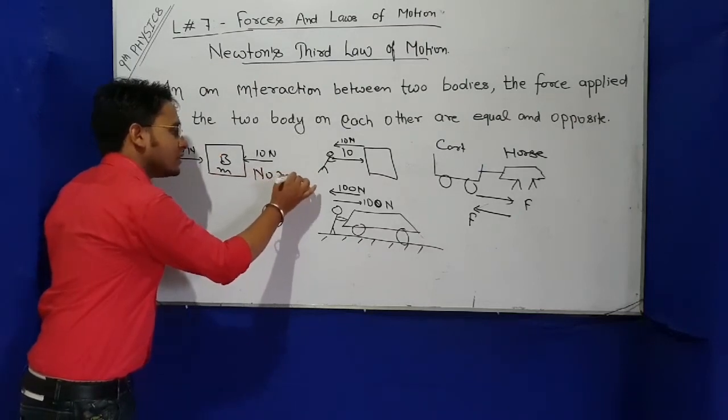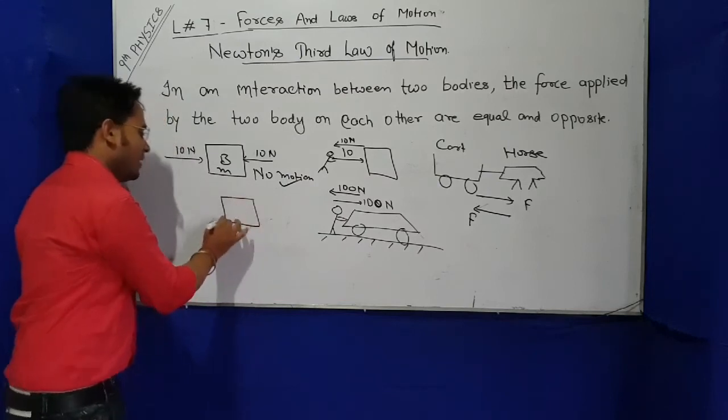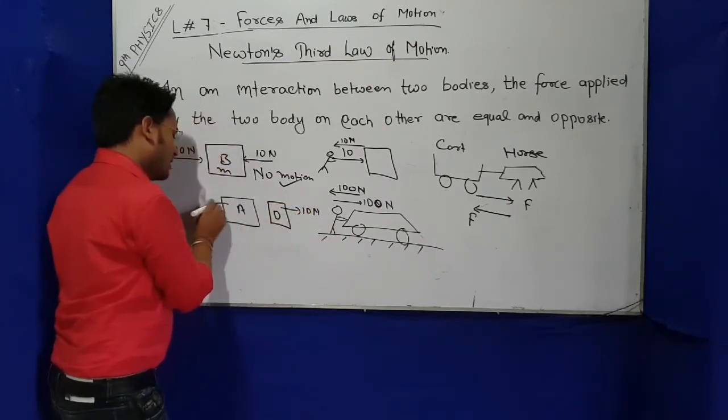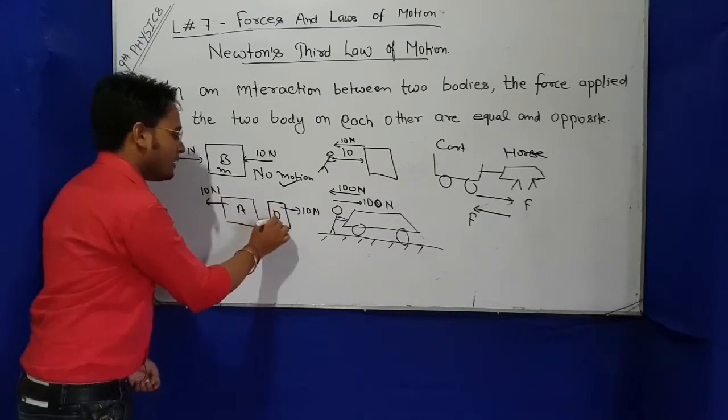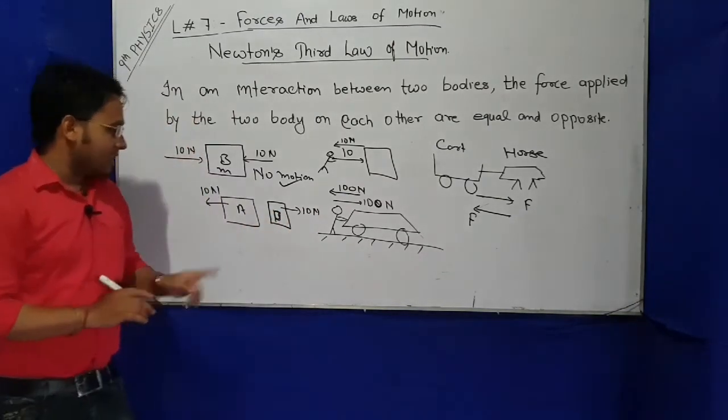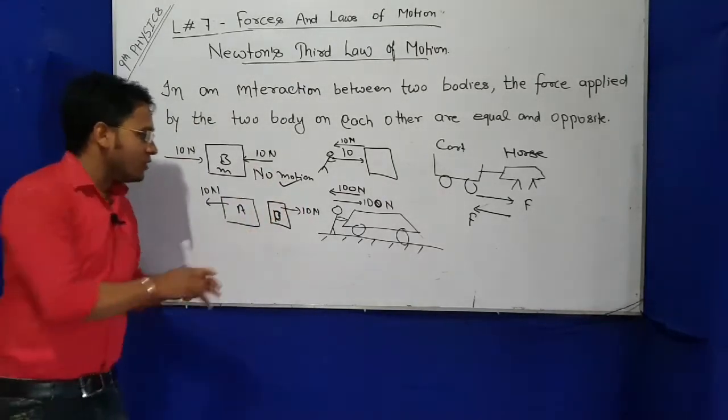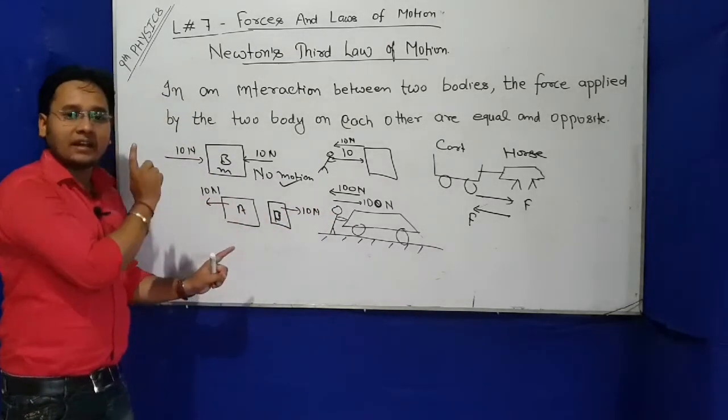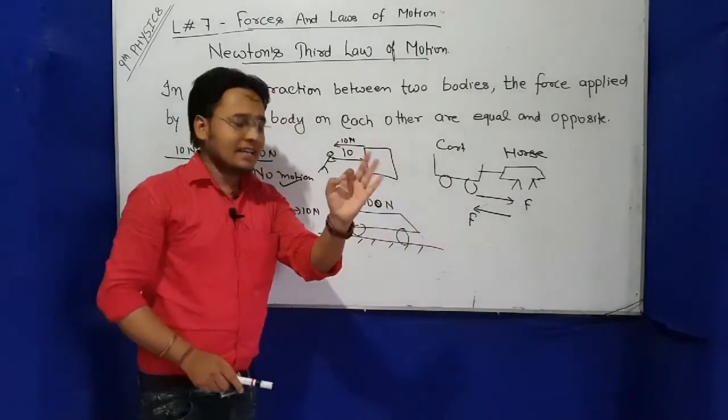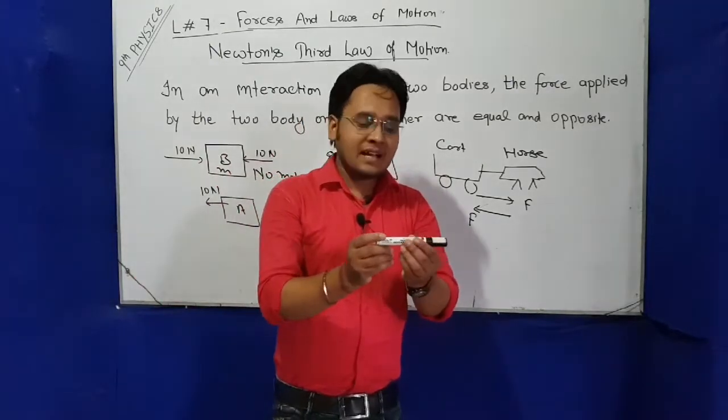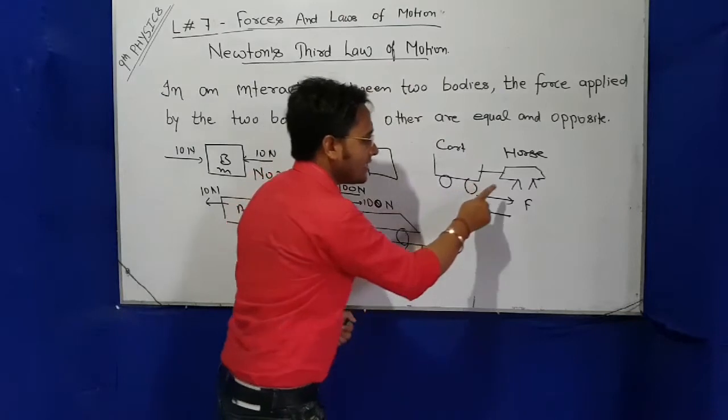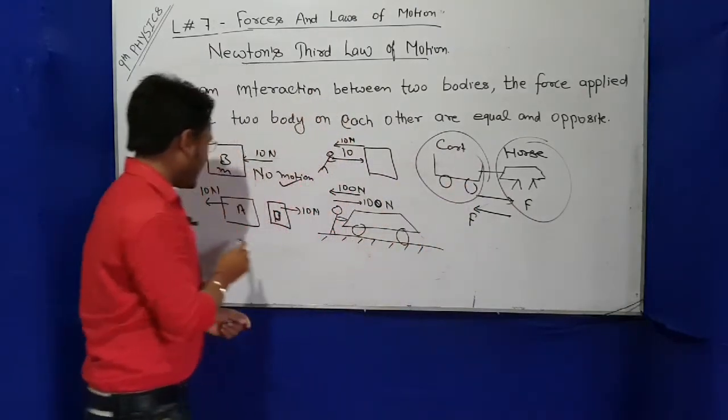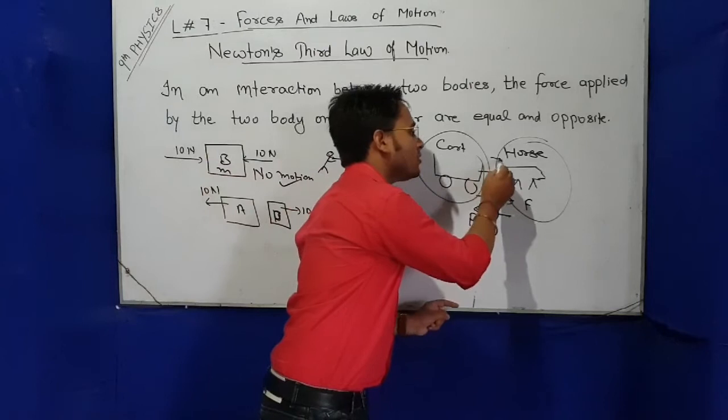But if body A and body B are separate, and body A applies 10 Newtons on B in one direction, and body B applies 10 Newtons on A in opposite direction - what is the motion? Obviously there is motion! Why? Because the forces are acting on two different bodies.